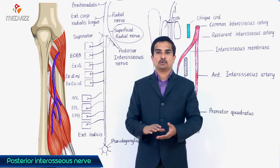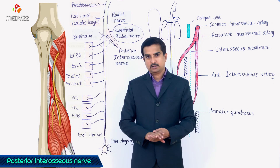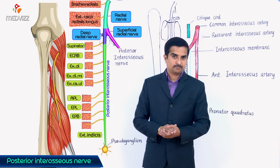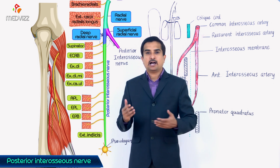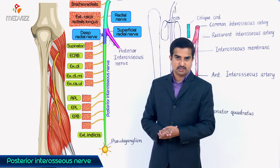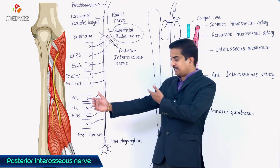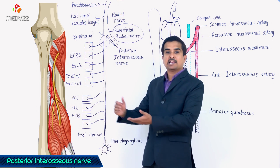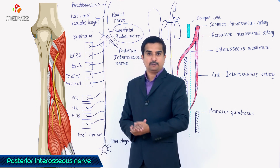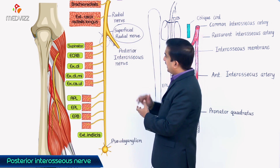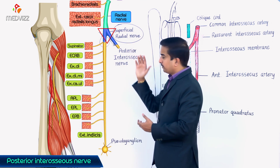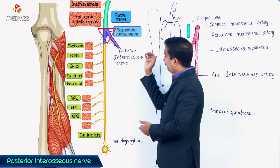The posterior interosseous nerve is not a separate nerve of the posterior compartment of the forearm; rather, it is a continuation of the deep branch of the radial nerve. The radial nerve is anterior to the lateral epicondyle in the lower aspect of the arm, from where it enters the cubital fossa. In the cubital fossa, the radial nerve gives off two branches.